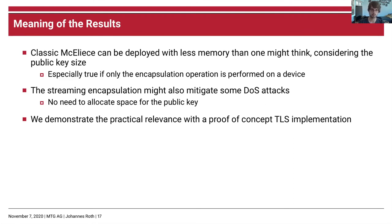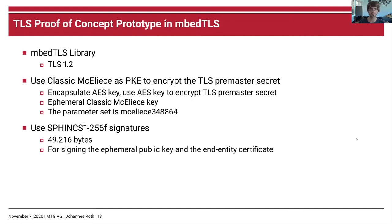Finally, we demonstrate the practical relevance with a proof-of-concept TLS implementation. We use the embedTLS library, which supports TLS up to version 1.2, and integrated Classic McEliece in a cipher suite using it as a public key encryption system. Specifically, we encapsulate an AES key and use that AES key to encrypt the TLS premaster secret — the same way one would use RSA — but with ephemeral Classic McEliece keys instead of static RSA keys.